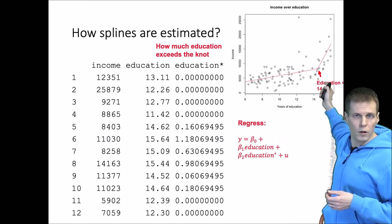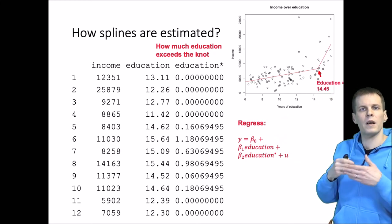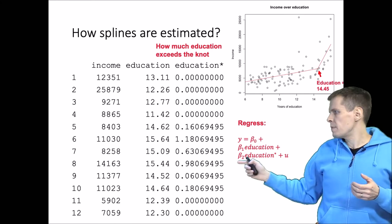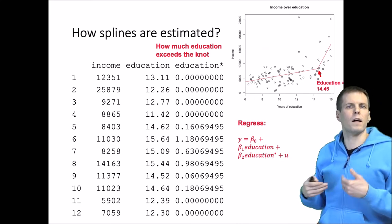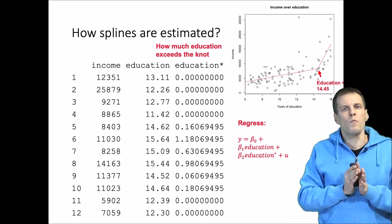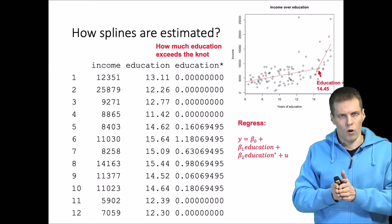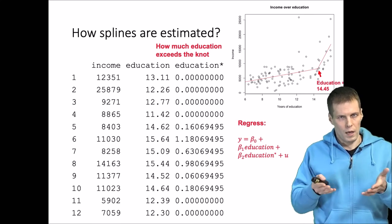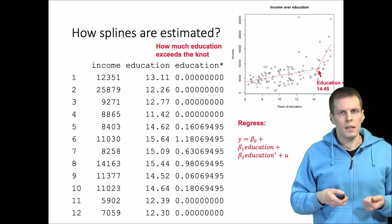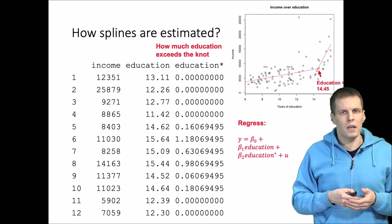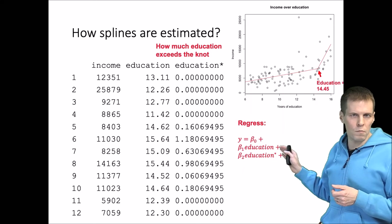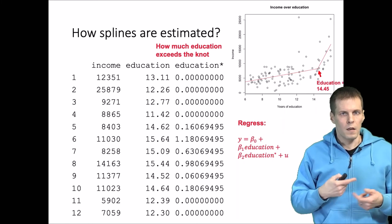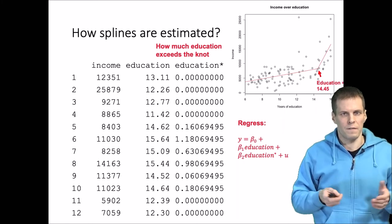So in fact what we are doing here is that we are estimating how much the slope will be different. This beta 2 estimates the difference of the slope and the interpretation is how much more these additional years of education beyond the knot point pay. And in practice these models are estimated by first specifying the regression model and then specifying the position of the knot as an additional parameter and then that is optimized to find the best fitting line.